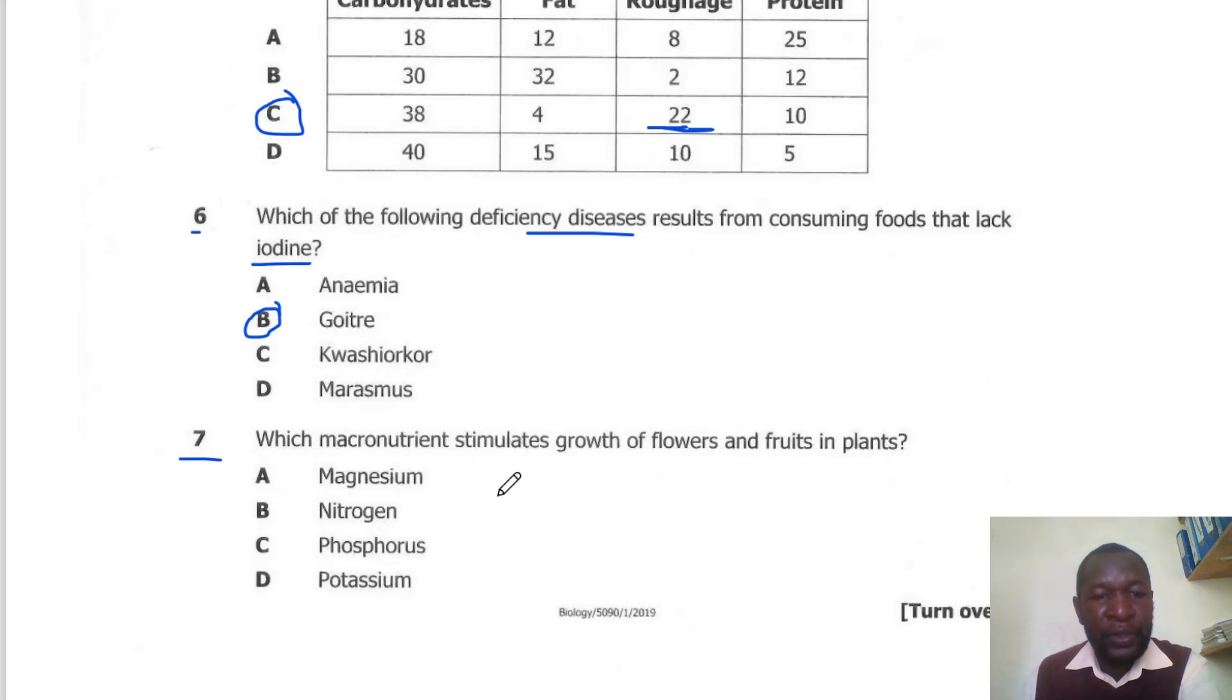Question 7. Which macronutrient stimulates the growth of fruits and flowers in plants? Fruits and flowers are stimulated by potassium. So the correct answer here is D.